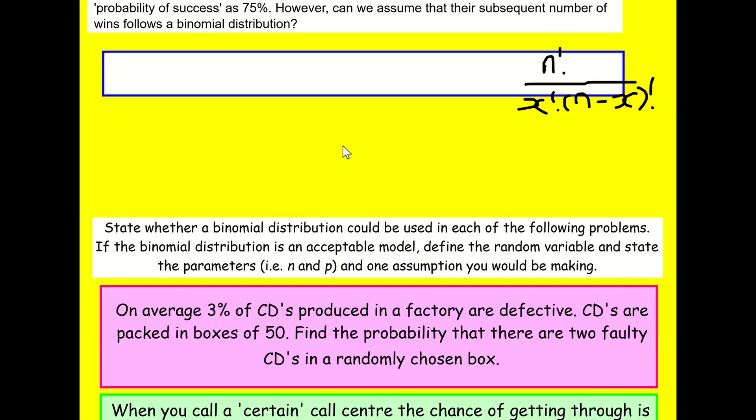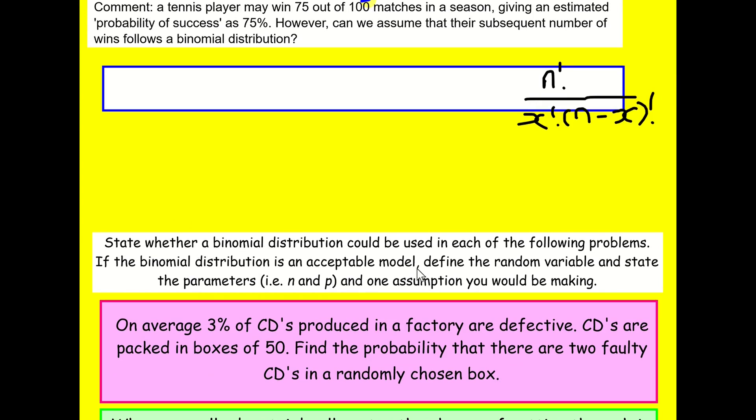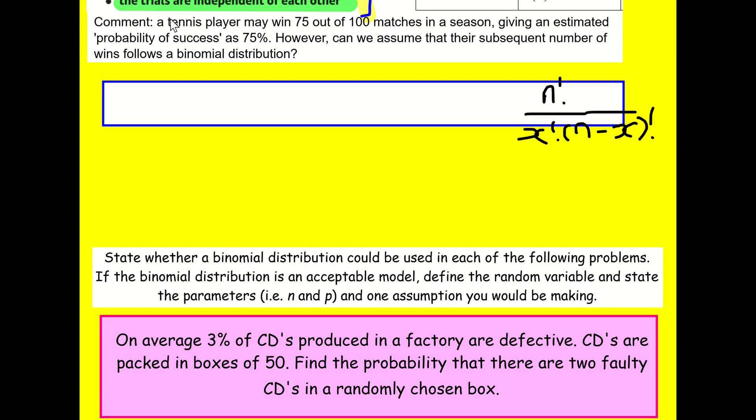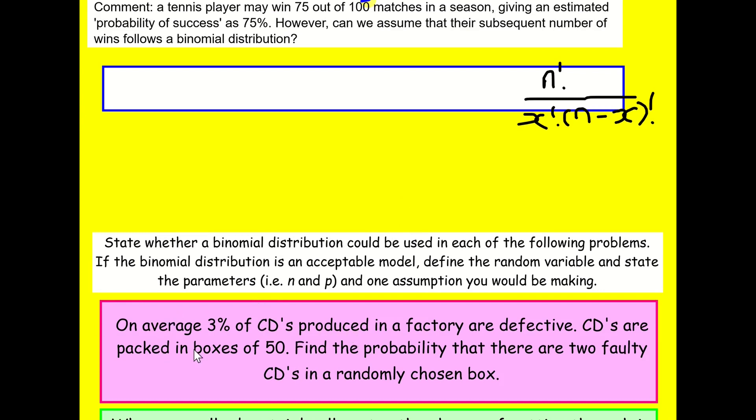Here goes. So I want you to state whether the following can be modeled by a binomial distribution. Is the binomial distribution an acceptable model? If it is, then I want you to define the random variable and state the parameters, i.e. n and p, and one assumption you'd be making. The random variable for this would be x is the number of wins in the next 10 matches. So n would be 10, the number of trials. p would be some sort of probability of success. But my x would be the number of wins that they make.